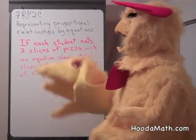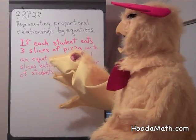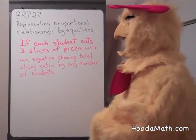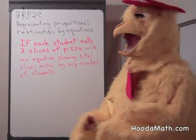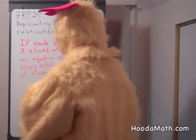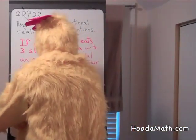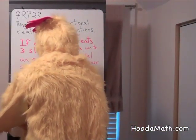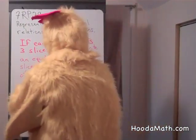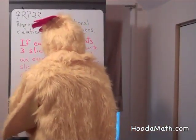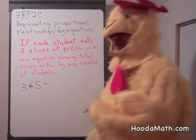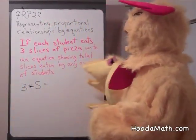Our unit rate is three slices per student. To write this equation, we have to multiply our unit rate — three — times how many students there are, and that's going to equal the total slices.